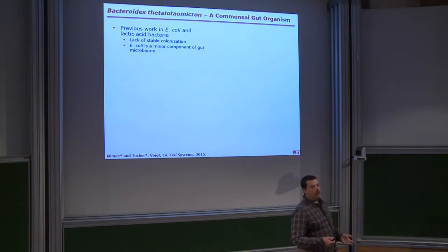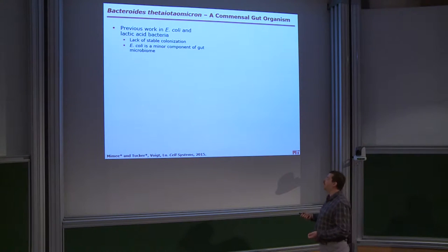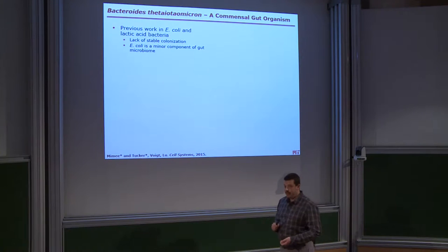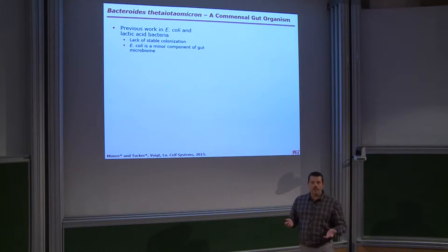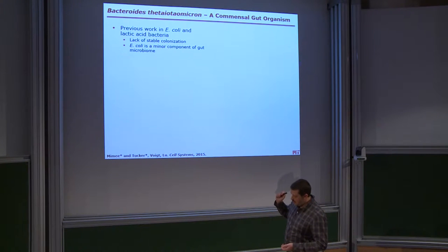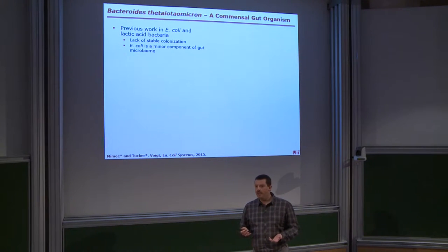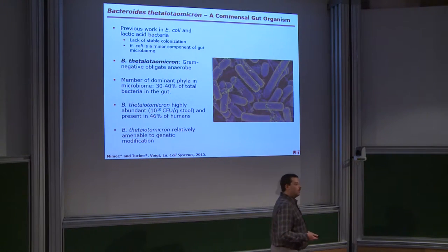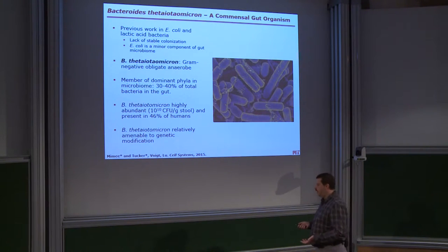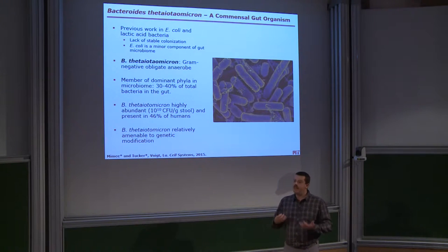Much work on modifying the microbiome has been based on E. coli. The vast majority of probiotics that exist today are either E. coli or lactic acid bacteria. E. coli is slightly better than lactic acid bacteria, but neither really colonize the gut microbiome easily. Gram-negative bacteria of the type of E. coli represent maybe 0–1% of the gut microbiome, so it's almost negligible. So we are looking for other bacteria more suited to creating a probiotic that would be steadily maintained in the gut.